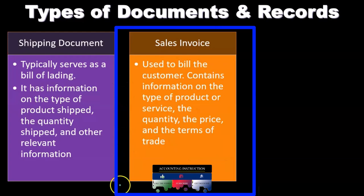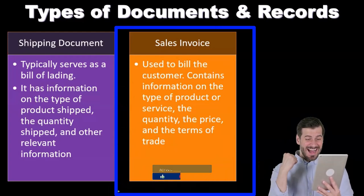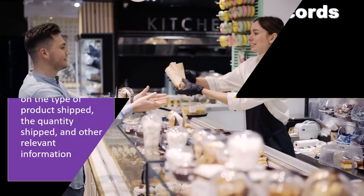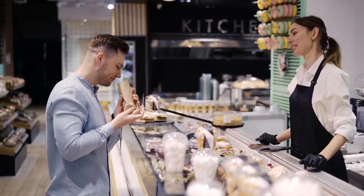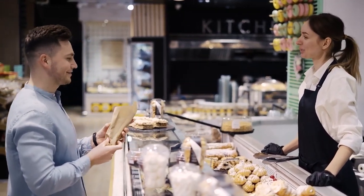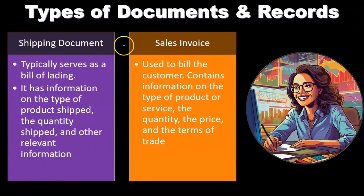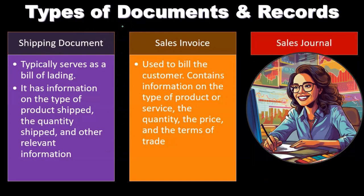The sales invoice is used to bill the customer and contains information on the type of product or service, the quantity, the price, and the terms of the trade. Many accounting software systems may trigger the recording of revenue at the point in time the invoice is created. However, if goods are being shipped, revenue should be recorded when the shipment or delivery occurs — whether FOB shipping or FOB destination. We need to look at the relationship between these documents and when the accounting software is recording revenue, to identify any timing difference issues.